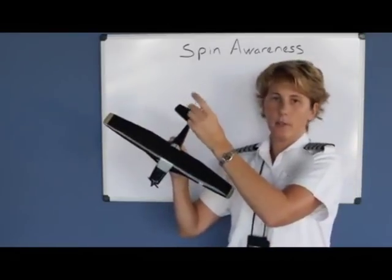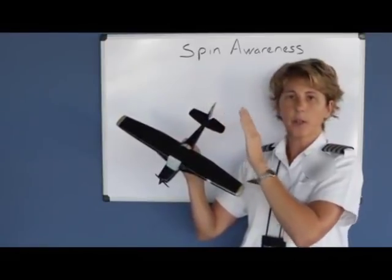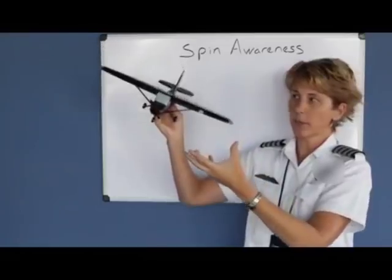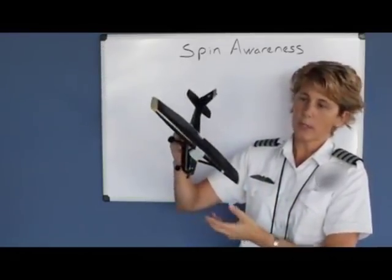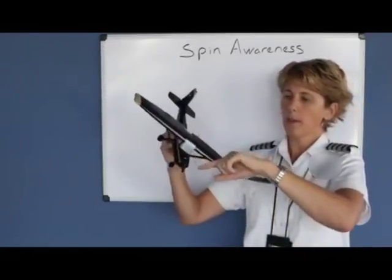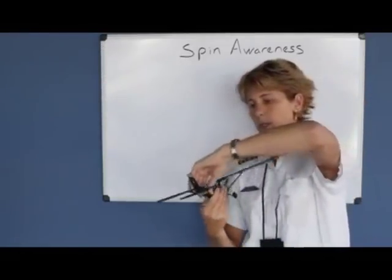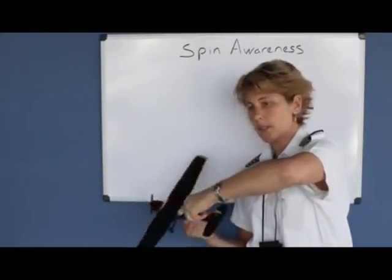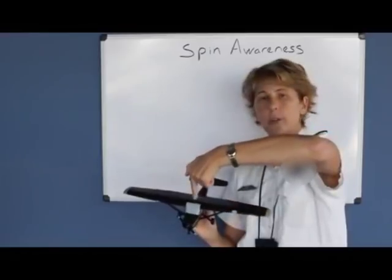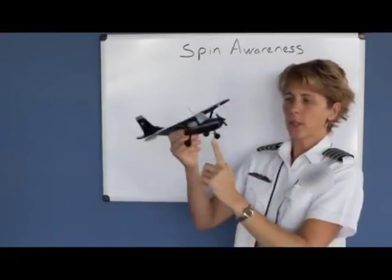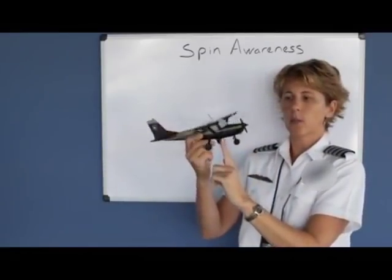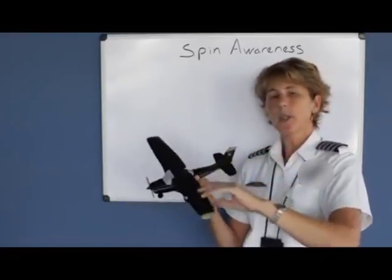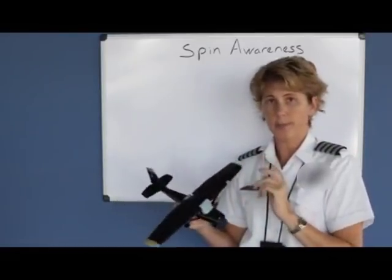The vertical stabilizer and rudder tend to weather-vane into the oncoming wind. The airplane is simply falling while it's rolling, so it will weather-vane into the oncoming wind. This sets up an auto-rotation, or a spin, around your vertical axis. Wherever your center of gravity was, that's where the airplane will rotate around in the spin. The spin will continue until you stop it.